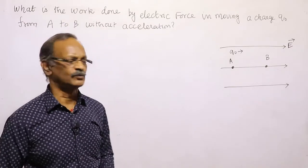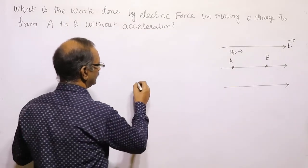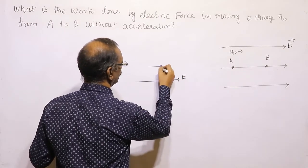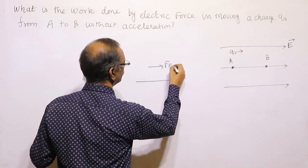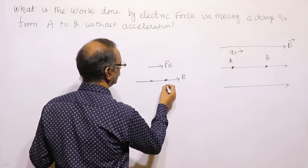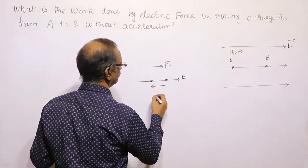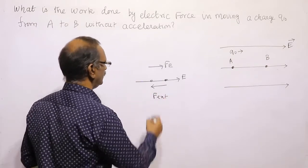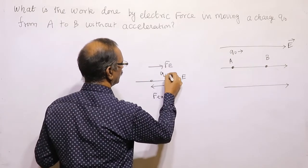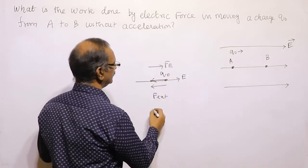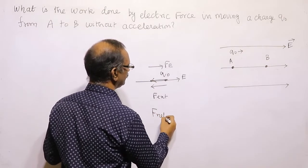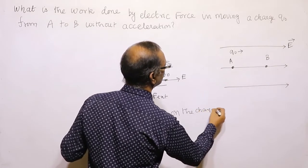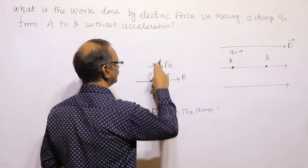Without acceleration means what? This is the electric field moving this way, which means electric force will be acting this way. When we move the charge from one point to another point, there is an external force. The charge is moved from here to here, so F_net on the charge — what is F_net on the charge?